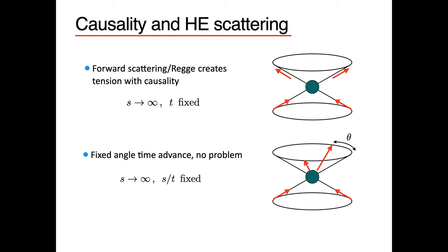How are we going to study this? There's a traditional way to think about causality experiments using gravitational scattering, typically done by thinking about forward scattering or the Regge limit — the limit where the center-of-mass energy goes to infinity with fixed momentum transfer t. This probes causality because you're scattering things essentially right on the light cone, and if something is wrong with your theory, the gravitational interaction will kick you out of the light cone, giving a causality violation.